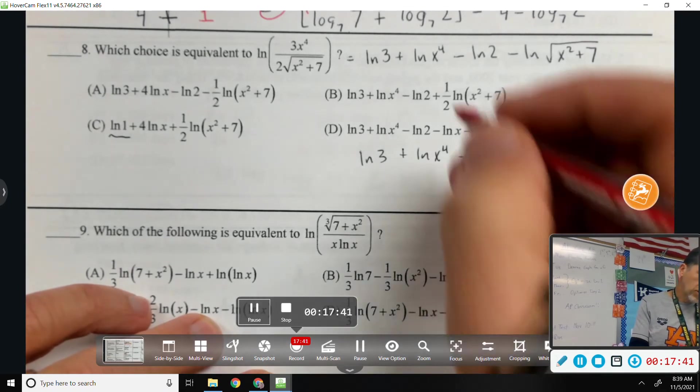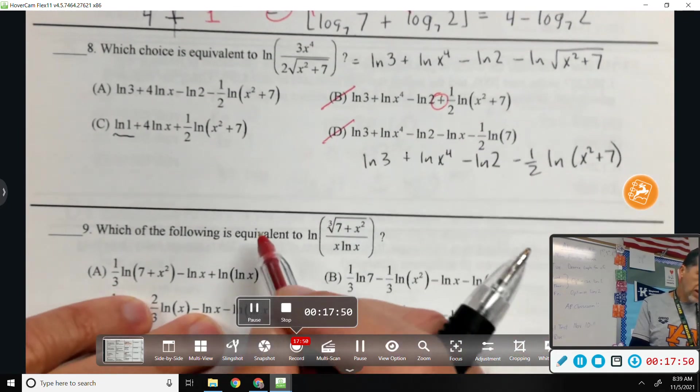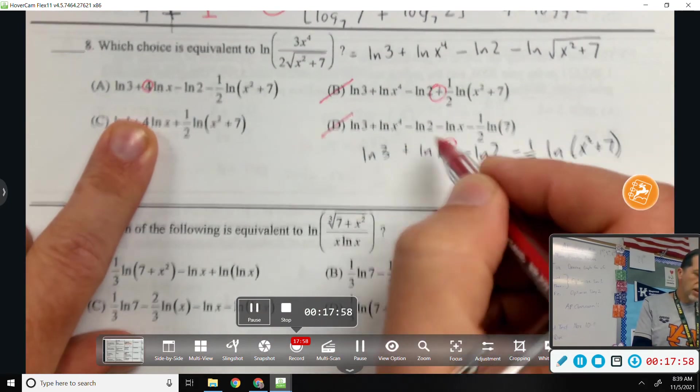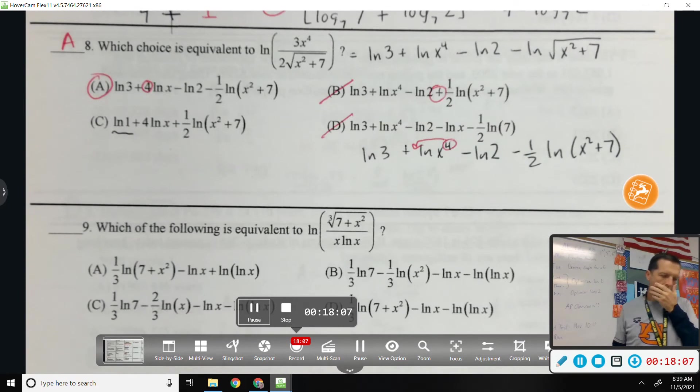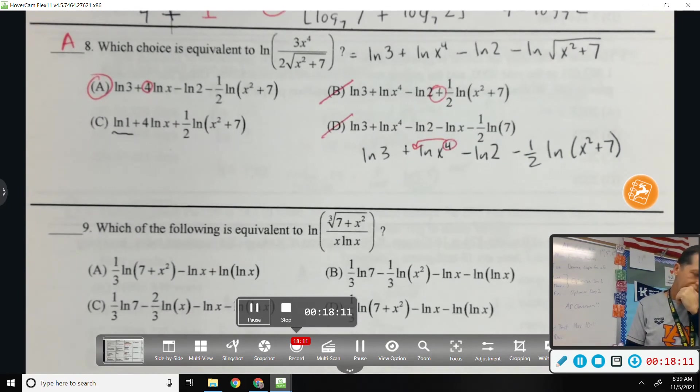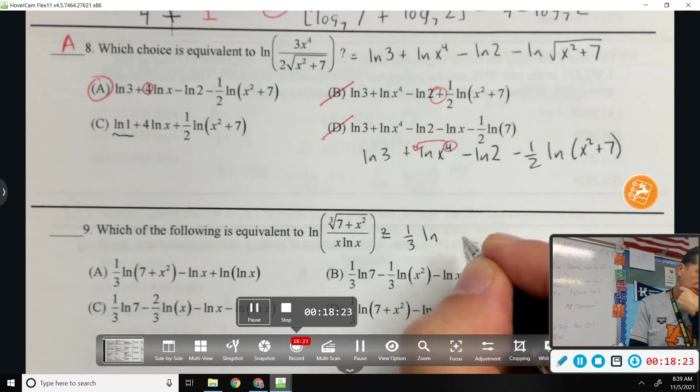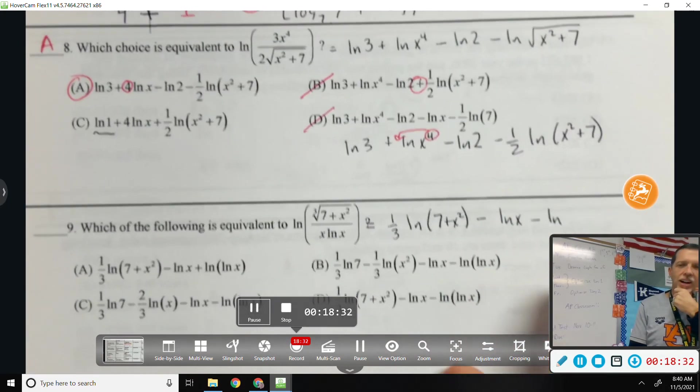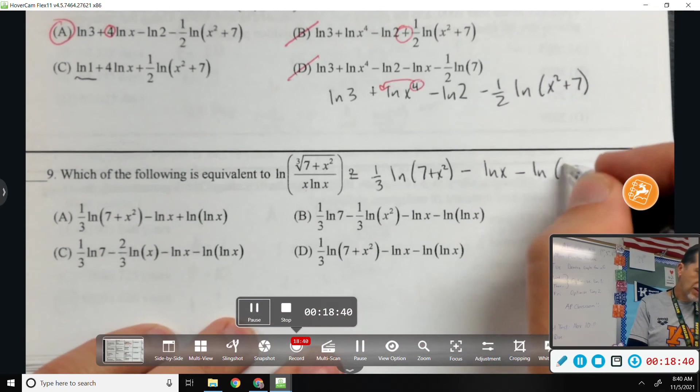So natural log three plus natural log x to the fourth minus natural log two minus one half natural log x squared plus seven. So is that one of my answer choices? Oh, close on B but that's a plus. I don't think D, I can't split those up like that. Is it? Wait, maybe it's A. A looks right except it's got a four out front and I had a four up here. Yeah, that's no big deal. So it's A. So same type stuff. If it's in the top, it's positive. I'm even going to skip to the one third natural log seven plus x squared minus natural log x minus natural log of natural log of x.